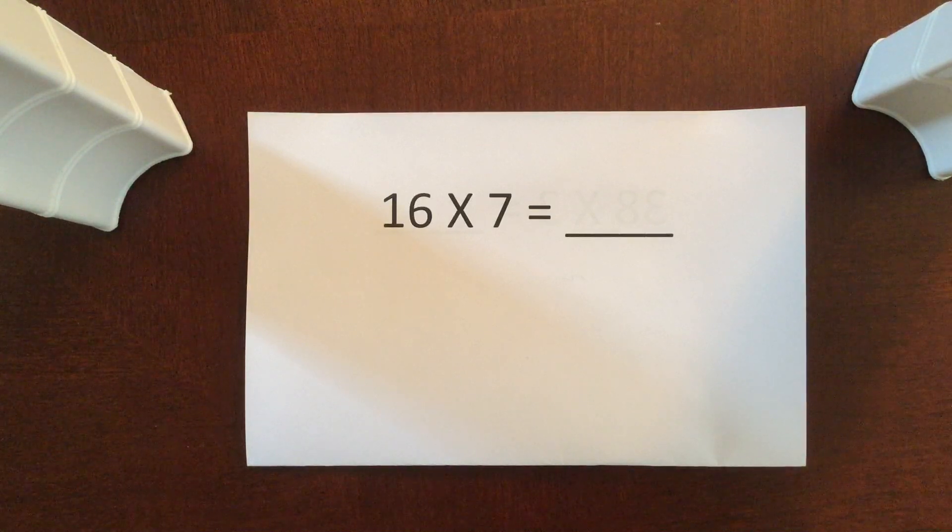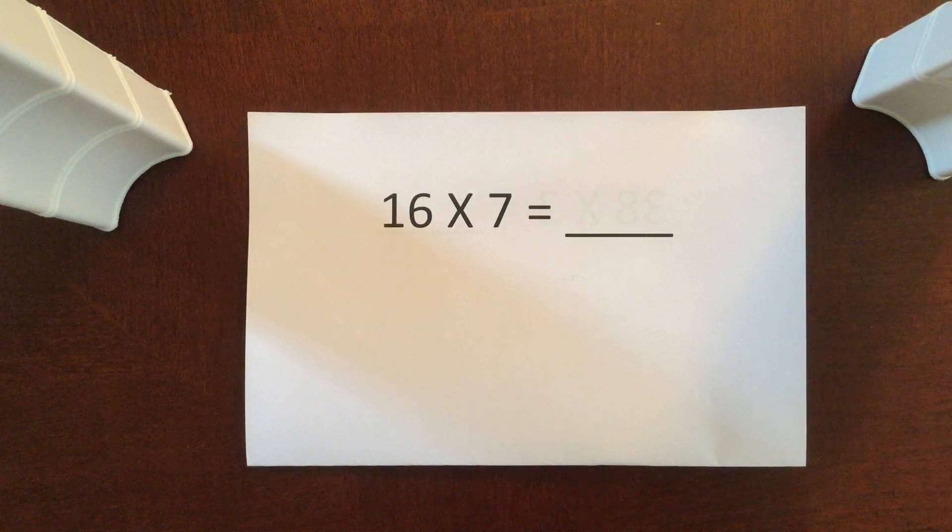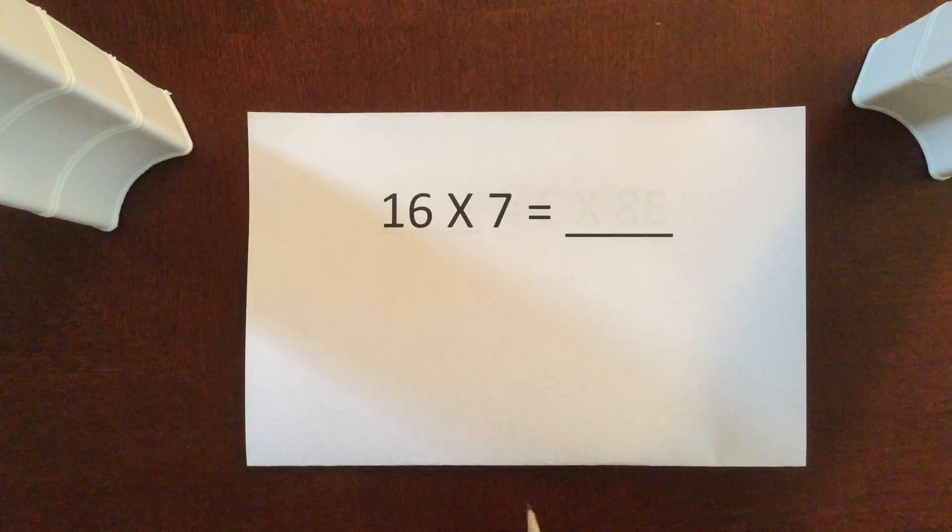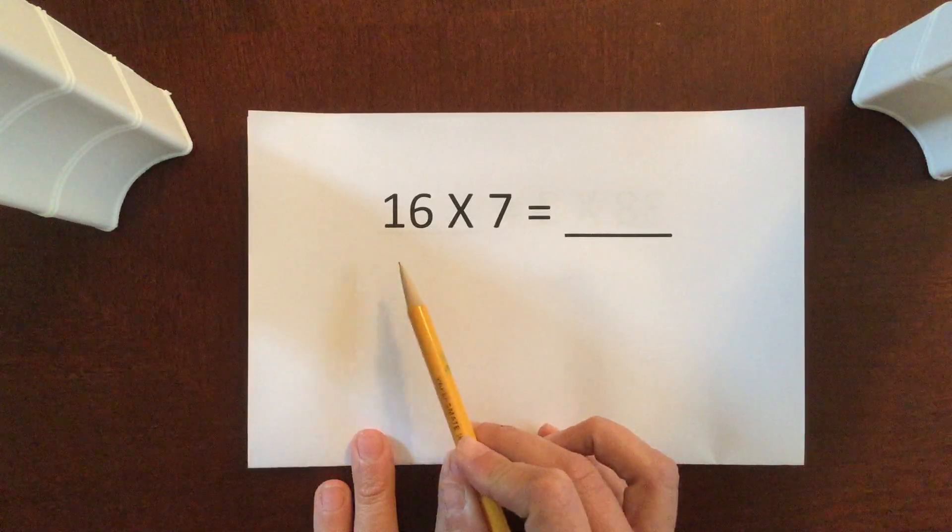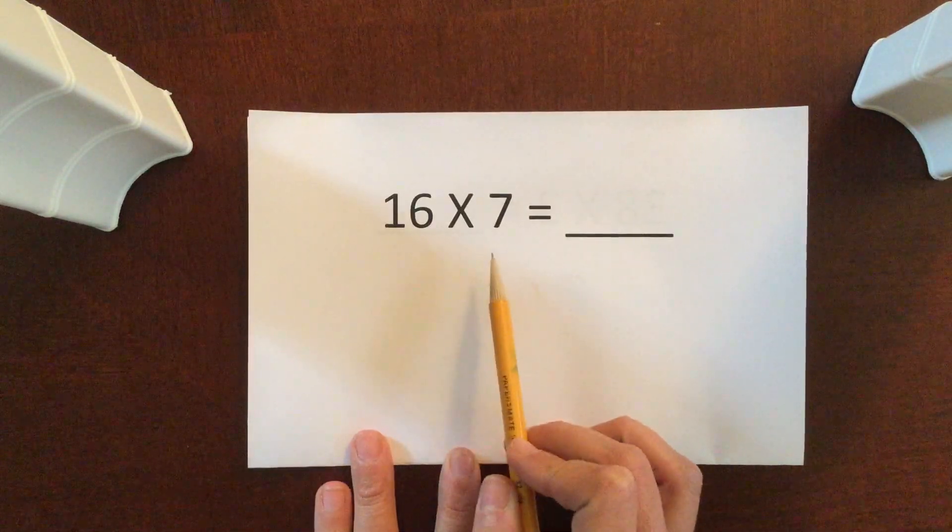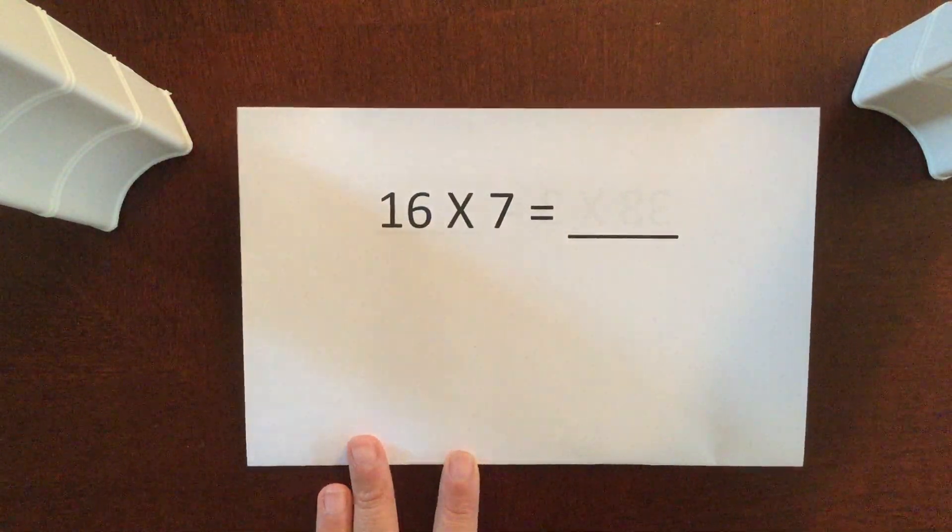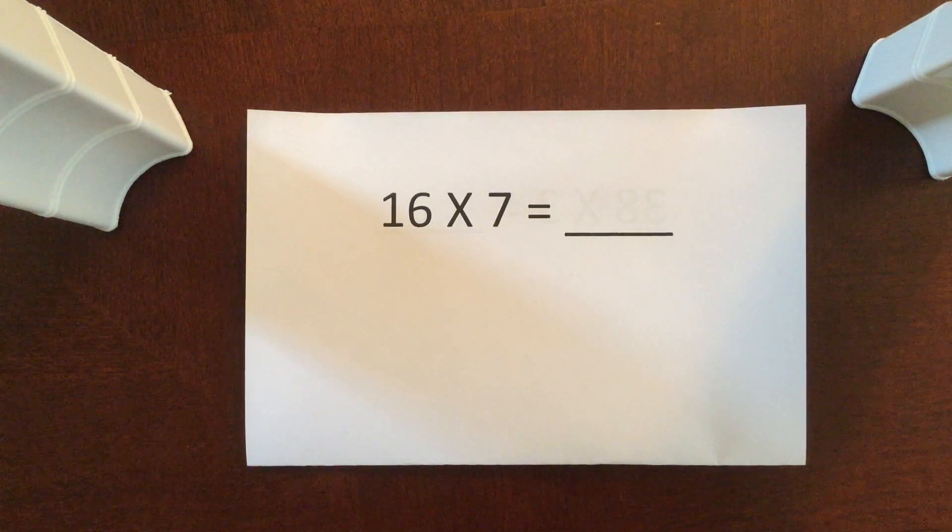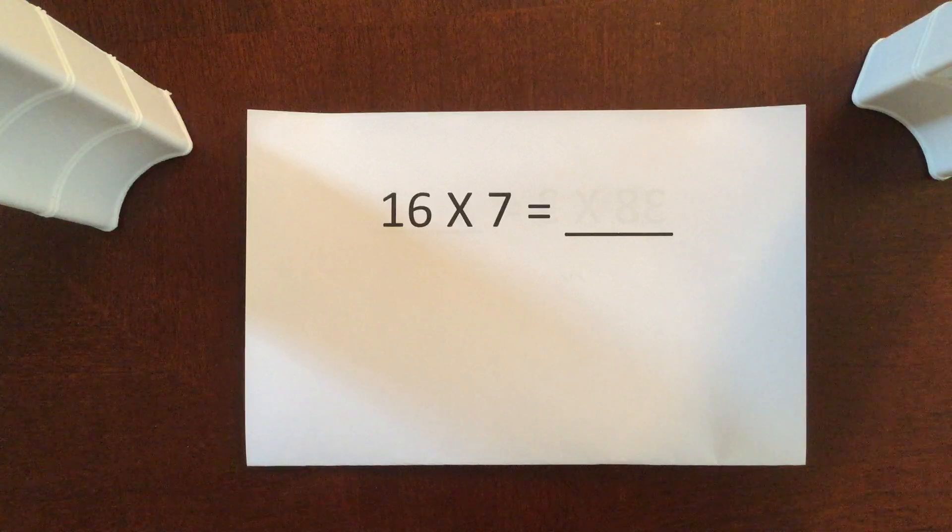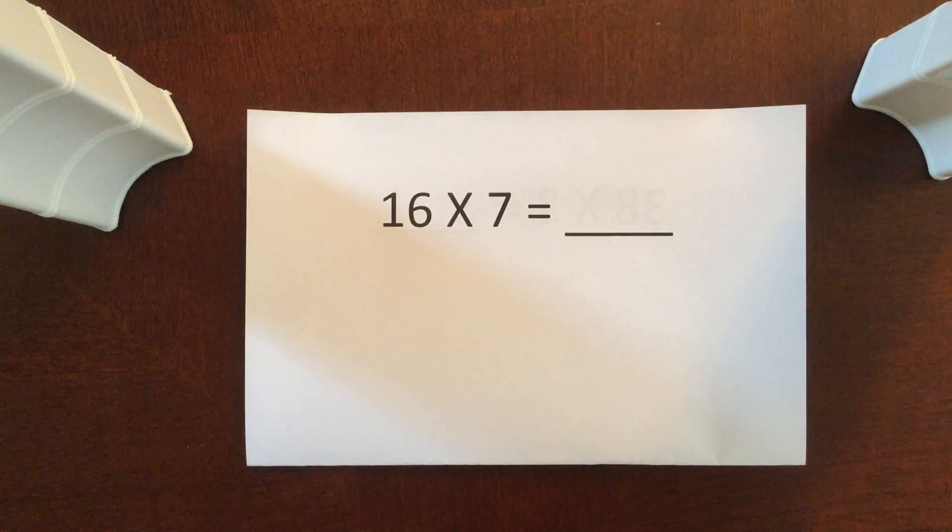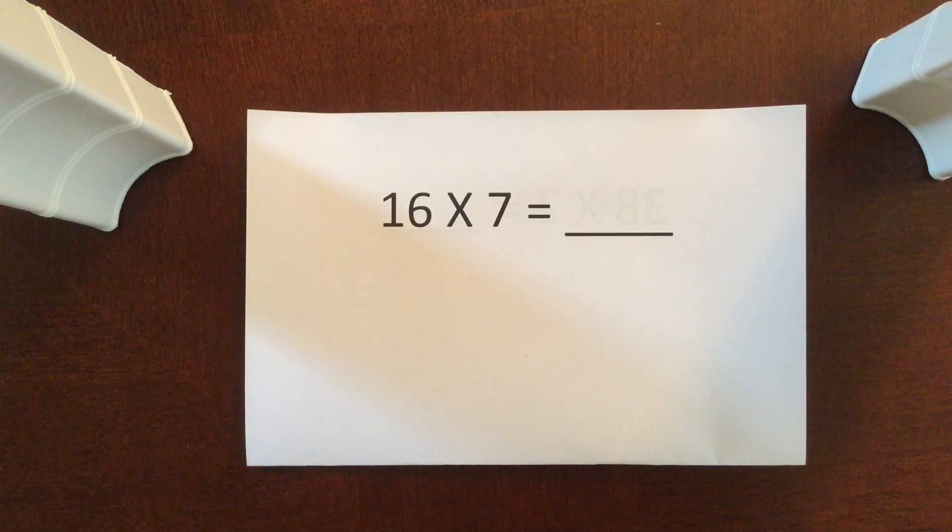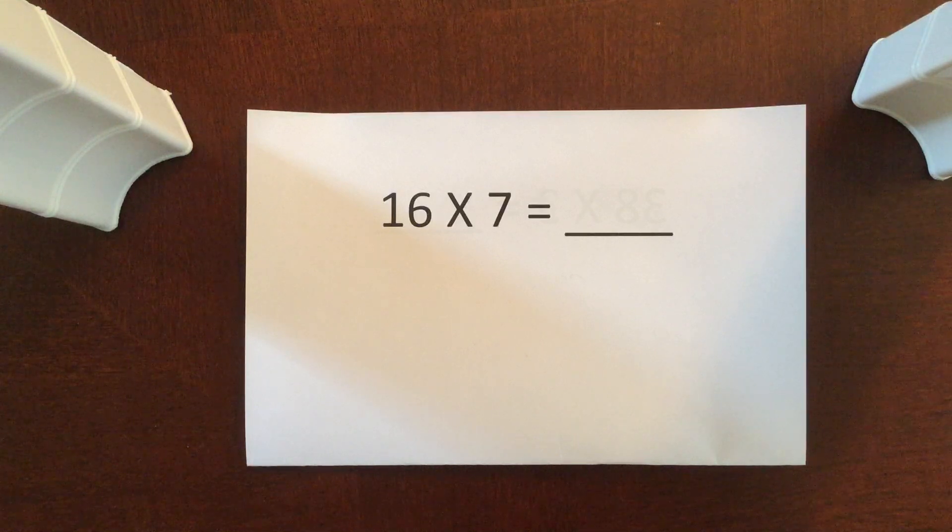with the multiplication strategy that we've been working on last week. So we are working on breaking apart numbers to make our lives easier when we get multiplication facts that are this big. 16 times 7 isn't a multiplication fact that we just know off the top of our heads. But we can break up this fact, this larger, harder fact, into smaller bites, smaller facts that we do know, and then we can work with those smaller bites to get our final answer, our final product.